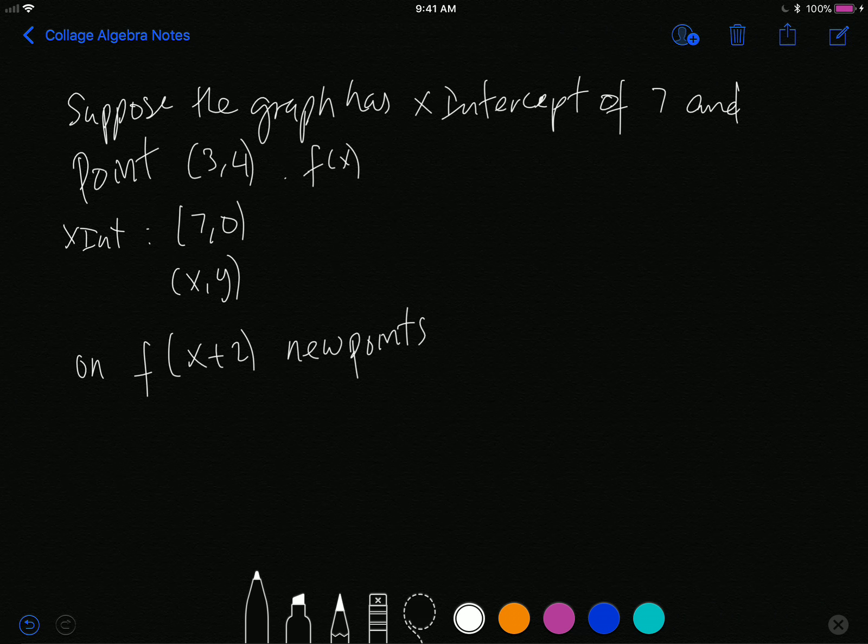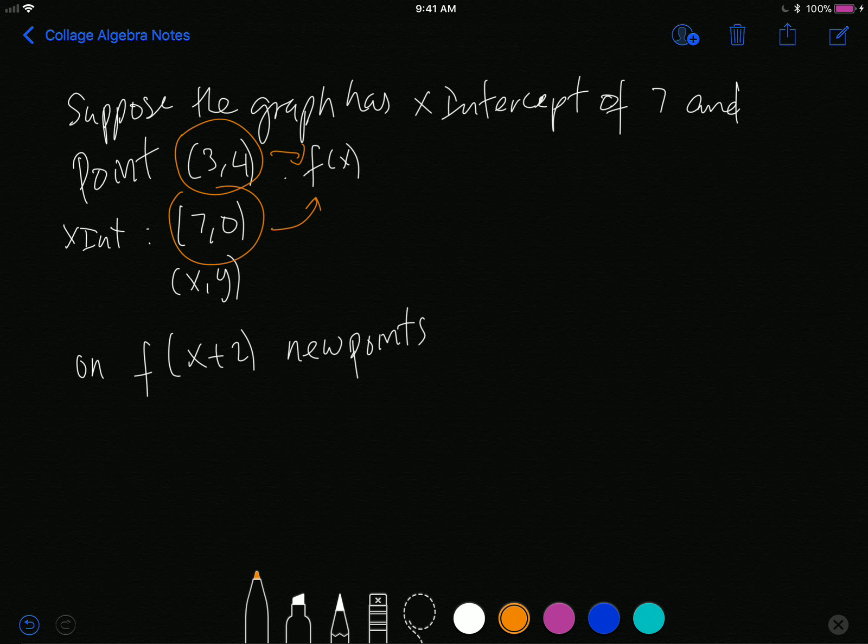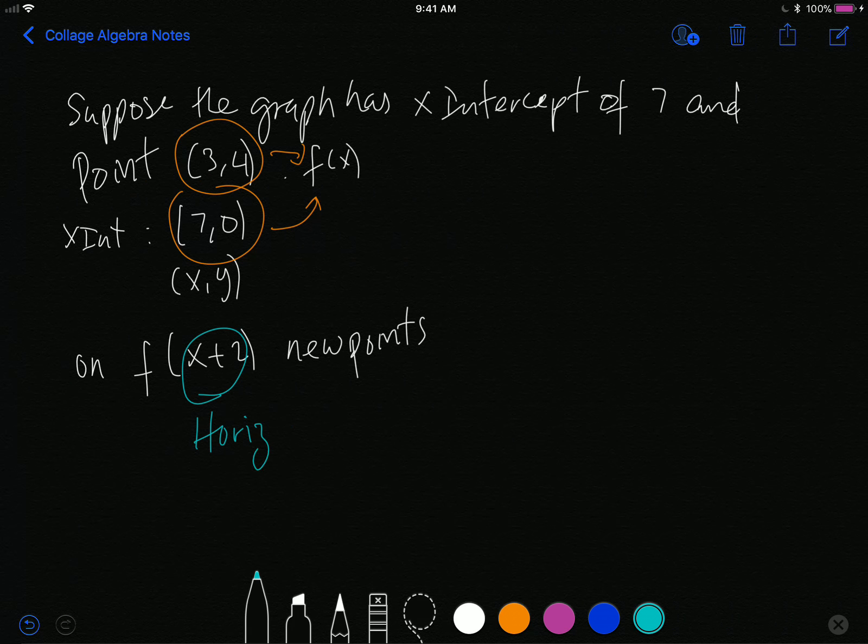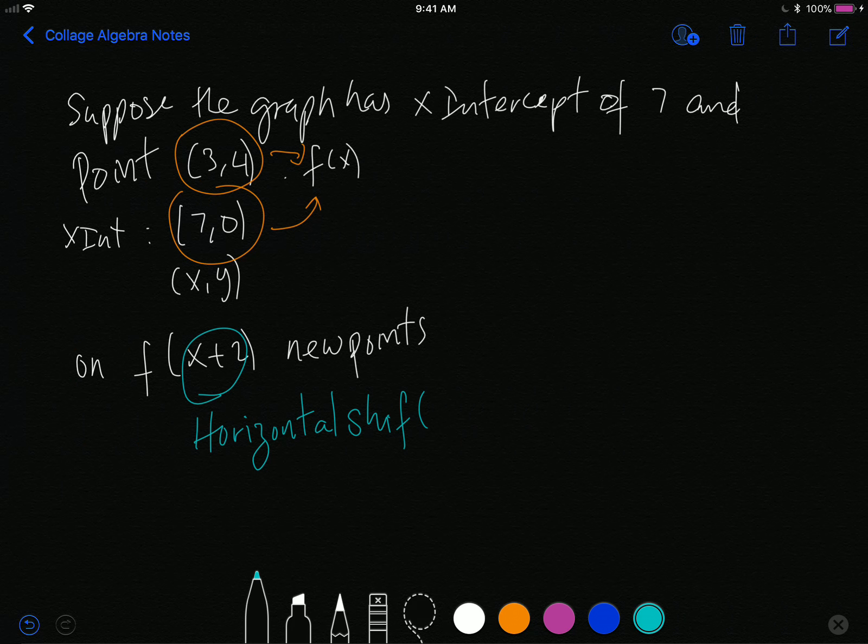What essentially they're asking you to do is take all the points which are connected to the function f and figure out what will be the new points after the transformation. The first step is simple. What you must do is identify the transformation that you see.